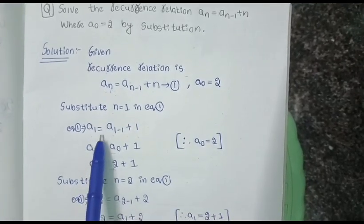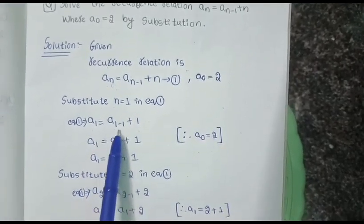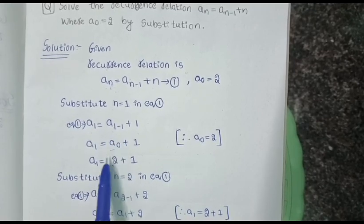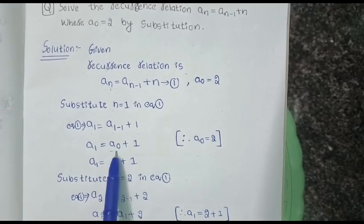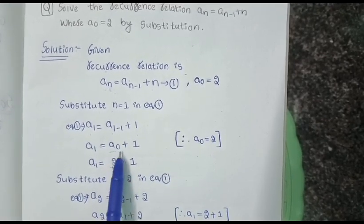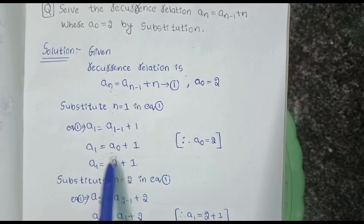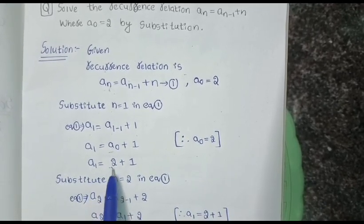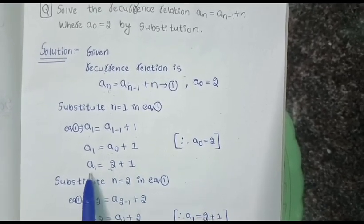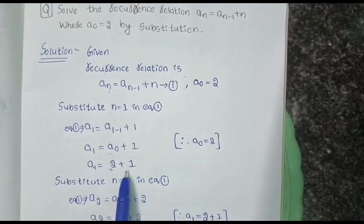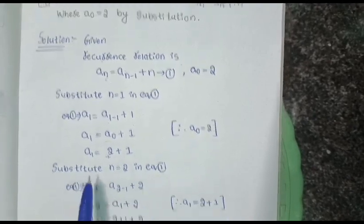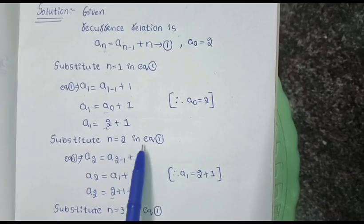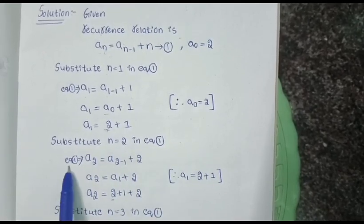Substituting n = 1 in equation 1 gives a_1 = a_{1-1} + 1, and a_{1-1} = a_0. From the question, a_0 = 2, so substituting gives a_1 = 2 + 1. We keep it in this form without adding.